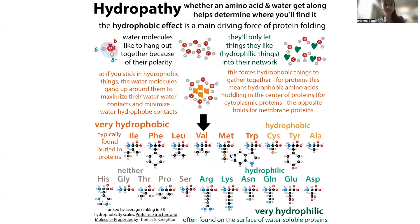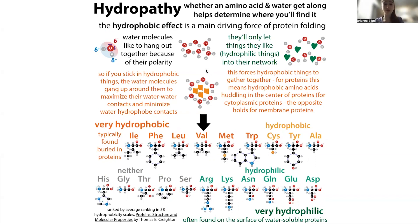So you're going to find valine in the center of proteins, at least when we're talking about water-soluble proteins. Valine is going to want to hang out in the center because the water is going to be forcing it there — the water is going to want to form bonds to other water molecules rather than form bonds to those hydrophobic things, and this forces the hydrophobic things in towards the center of the protein.